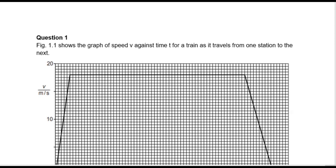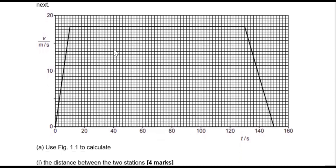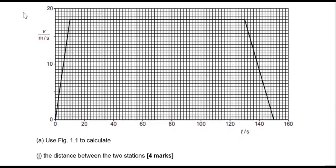Question 1 says that figure 1.1 shows a graph of speed against time as a train travels from one station to the next. On our x-axis we have time specified, and on our y-axis we have the speed or velocity in meters per second. We're going to use this graph to calculate the distance between the train stations. Before we calculate the distance, let's break the graph up into different sections and understand what's happening to the object at different points.